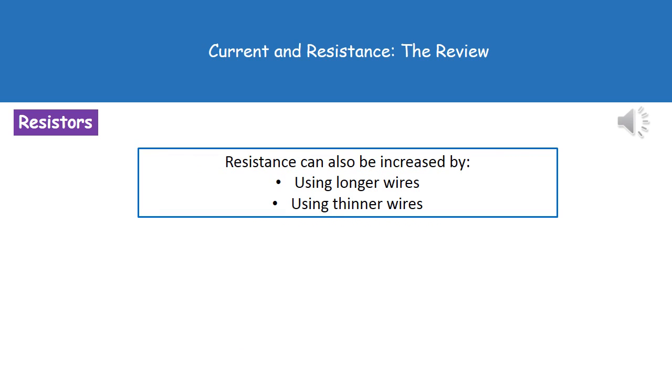There are two other ways that we can actually increase our resistance as well. One is by using longer wires and the second is using thinner wires. So both of those will actually increase the amount of time it takes for our electrons to flow through that area, and therefore it increases the resistance and decreases the current.